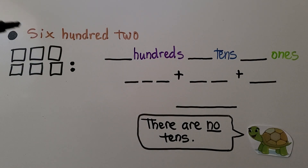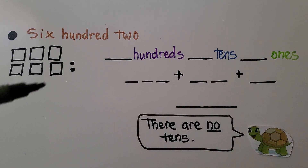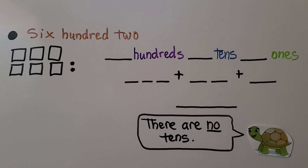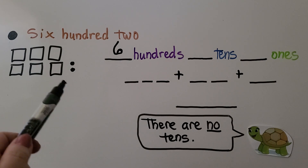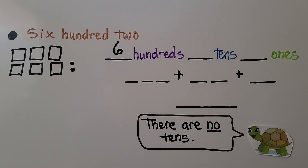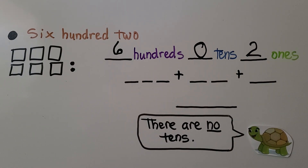Here we have a three-digit number in word form: six hundred two. We make six squares for the six hundred and two little dots for the two. Using number names: we have six hundreds, no lines for tens so we have zero tens, and two ones — six hundreds, zero tens, two ones. There are no tens.